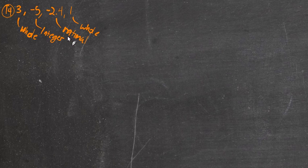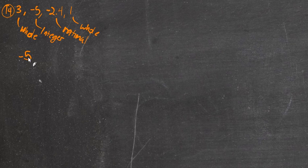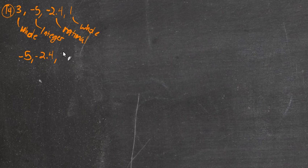Now we write them from least to greatest. The negatives are the least, of course, and the one furthest to the left is the smallest. Negative 5 is furthest to the left, followed by negative 2.4. Then we cross zero and get to the positive numbers: 1, and then 3 is the greatest number in that list.